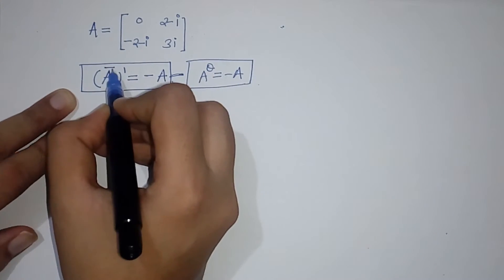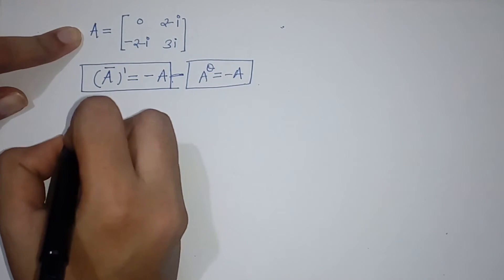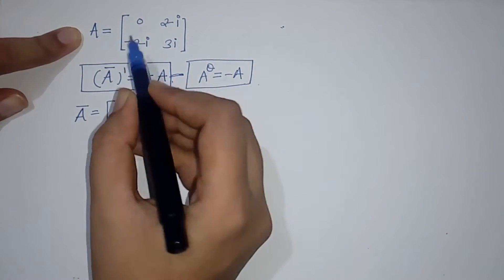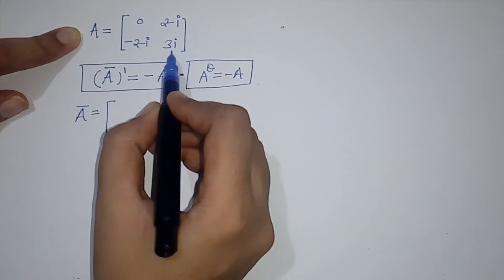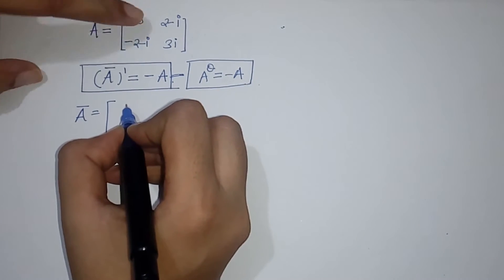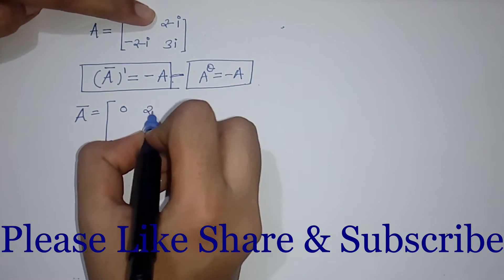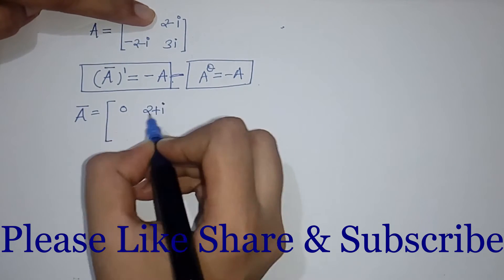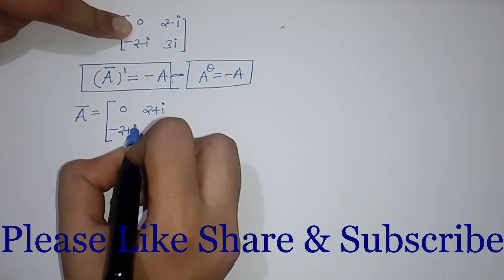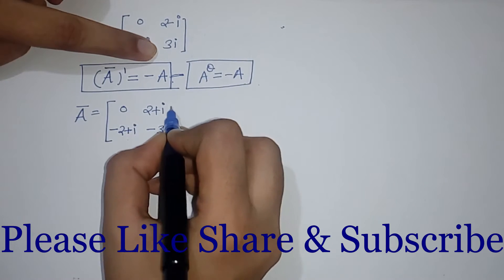First, we take the complex conjugate, forming A-bar. We replace all elements by their conjugates: 0 remains 0; (2 minus i) conjugate becomes (2 plus i); (2 plus i) conjugate remains (2 plus i) — wait, we write each element one by one: the conjugate of (2 minus i) is (2 plus i), and the conjugate of (minus 3i) is (plus 3i).